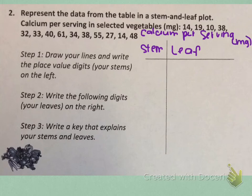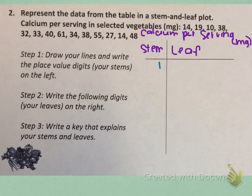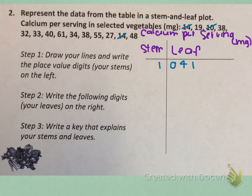Now let's look at the numbers in our data set. The smallest number I see in the tens place is a one, so the first stem we're going to put is a one. We can look through the list and find all numbers that begin with one and write the ones digits as leaves. The smallest one I see is ten, so I'll cross that off and put a zero for my leaf. The next number that starts with a one is fourteen, so I'll put a four as a leaf. I see another fourteen, so we're going to have to put another four. Then the next number is nineteen, so I put a nine as a leaf. I don't see any more that start with a one.